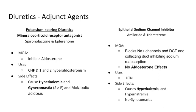Very high yield: these can cause hyperkalemia. The two transporters by which we reabsorb sodium in the distal convoluted tubule work with potassium and hydrogen. So we can cause hyperkalemia and metabolic acidosis because blocking that transporter means we retain potassium and hydrogen ions. Additionally, spironolactone can cause gynecomastia — breast-like tissue swelling in men. Spironolactone is much more known for this than eplerenone.